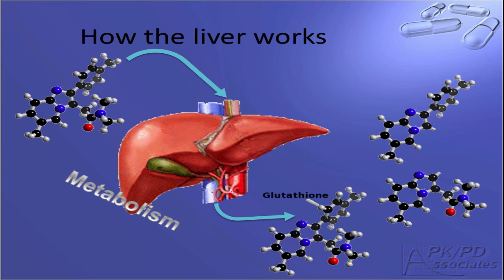The liver is the location for a majority of drug metabolizing enzymes, like the cytochrome P450s. Thus, metabolism is the key function of the liver. Drug enters the liver through either the arterial supply or the portal vein, and is distributed throughout the tissue. Metabolism takes place, and the drug leaves the organ.